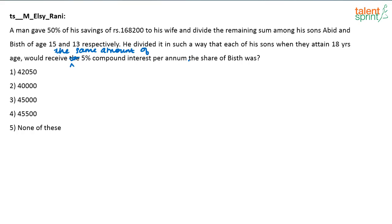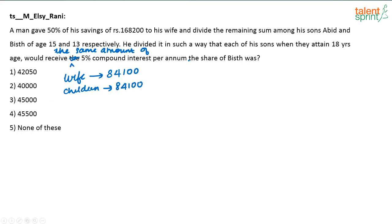Now let's solve it. The man gave 50% of his savings of rupees 168,200 to his wife, so he gave half — that is 84,100 — to his wife. The remaining 84,100 goes to his children. If we call the two sons A and B, then A and B together receive 84,100. Let's say A receives x rupees, then B receives 84,100 minus x rupees.